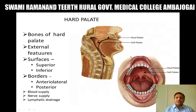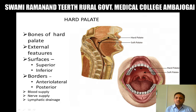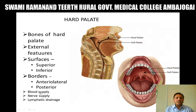Borders of the hard palate: it shows an anterolateral border and a posterior border. The anterolateral border continues towards the gums and the alveolar arches, whereas the posterior border gives attachment to and suspends the soft palate. Blood supply is by the greater palatine artery, a branch of the maxillary artery. Nerve supply is by the greater palatine nerve, nasopalatine nerve, and lesser palatine nerve. Lymphatic drainage is by the upper deep cervical group of lymph nodes and retropharyngeal group of lymph nodes.